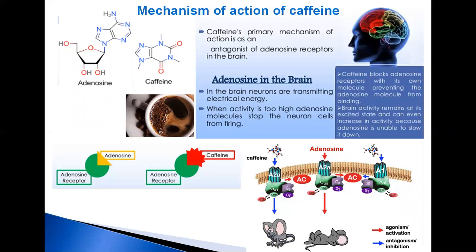In the absence of caffeine, and when a person is awake and aware, little adenosine is present in central nervous system neurons. With a continued wakeful state, over time, adenosine accumulates in the neuronal synapse, in turn binding to and activating adenosine receptors found in certain central nervous system neurons. When activated, these receptors produce a cellular response that ultimately increases drowsiness.